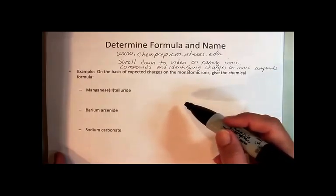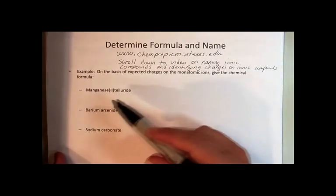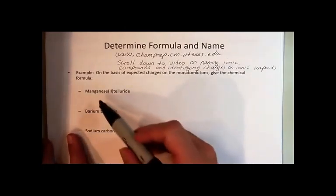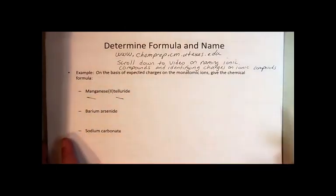All right, so let's practice writing formulas based on the name. So the name of this ionic compound, I know it's an ionic compound, first of all, because it's a metal and a non-metal. And I know that those are metals and non-metals because I'm going to look on the periodic table, manganese.